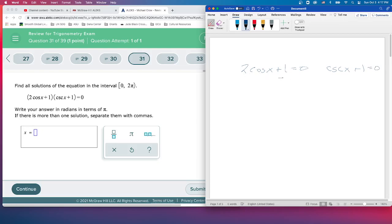We'll solve the first one first. We're probably more comfortable with cosine. Subtract 1 from both sides: 2cosine(x) = -1. Divide by 2: cosine(x) = -1/2.